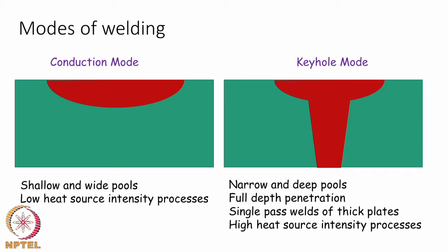In keyhole mode you normally see narrow and deep pools, but at the very top of the weld pool the shape is very close to the conduction mode. You could actually imagine keyhole mode as conduction mode plus a vertical column forming the keyhole, and it is not as if these two modes can be chosen a priori.